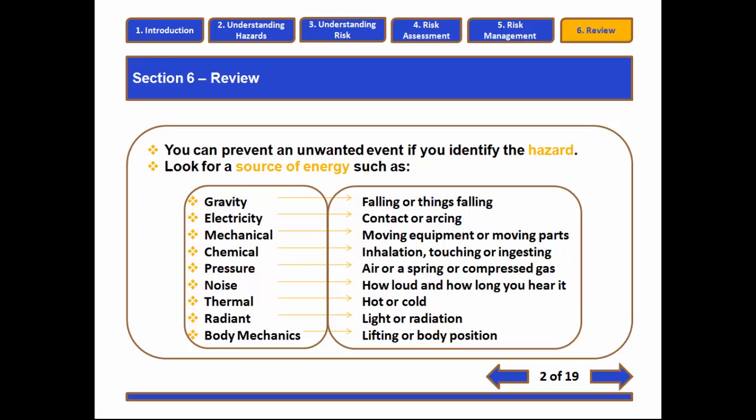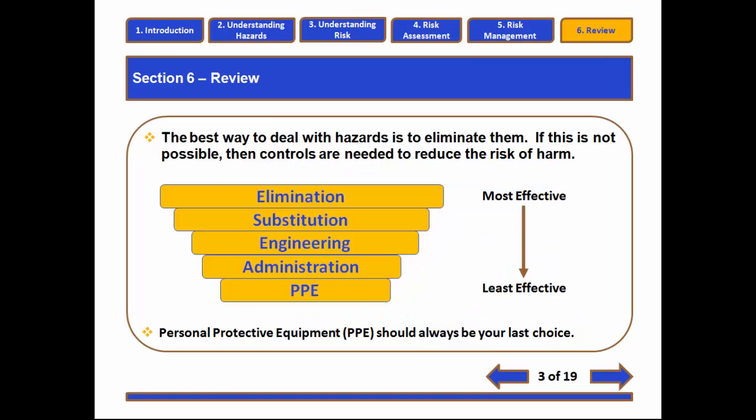There are lots of different sources of energy: gravitational, electrical, mechanical, chemical, pressure, noise, thermal, radiant, and body mechanics — many different sources of energy. If those energy sources are not controlled, their release can cause an unwanted event. This process is described as a hazard.